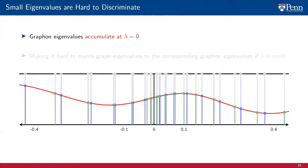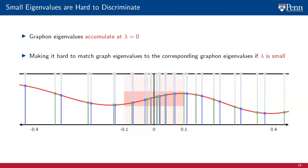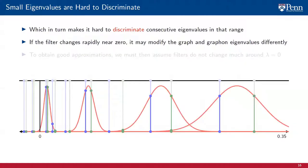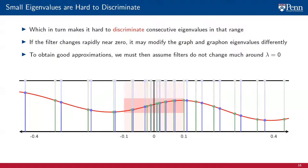A trouble we face when approximating graphon filters with graph filters is the fact that the eigenvalues of a graphon accumulate around 0. That accumulation makes it hard to match graph eigenvalues to the corresponding graphon eigenvalues when lambda is small, which in turn makes it hard to discriminate between consecutive eigenvalues in that range. Thus, if we allow the filter to change rapidly around 0, the filter may modify the graph and graphon eigenvalues differently. To obtain good approximations of a graphon filter with a graph filter, we must then restrict our attention to filters that do not change much around lambda equal to 0.